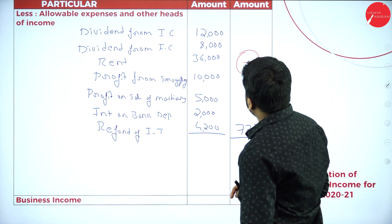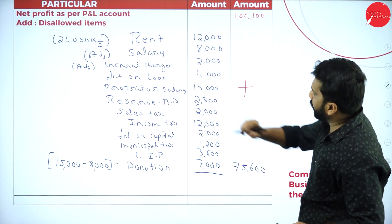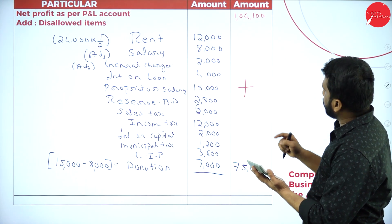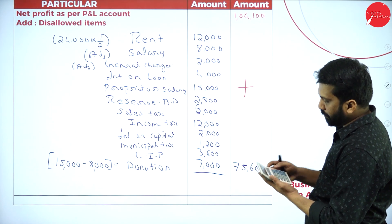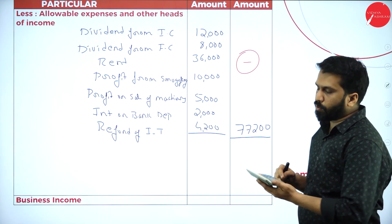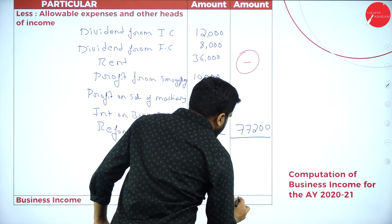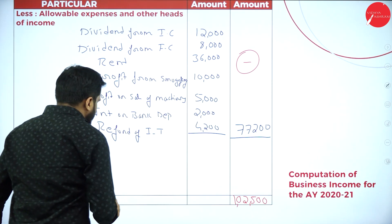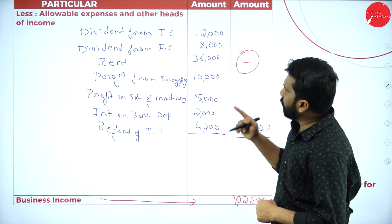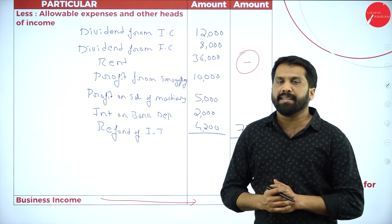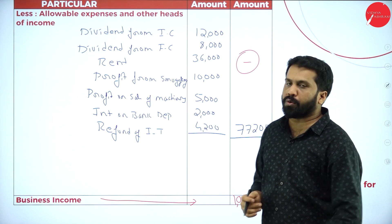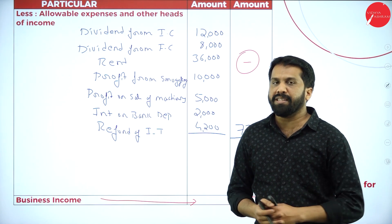So the interim calculation is: net profit ₹1,04,100 plus disallowed items ₹75,600 minus other-head income ₹77,200. This gives a business income figure. Please work out the answer without looking, and take a screenshot of the question and adjustments.